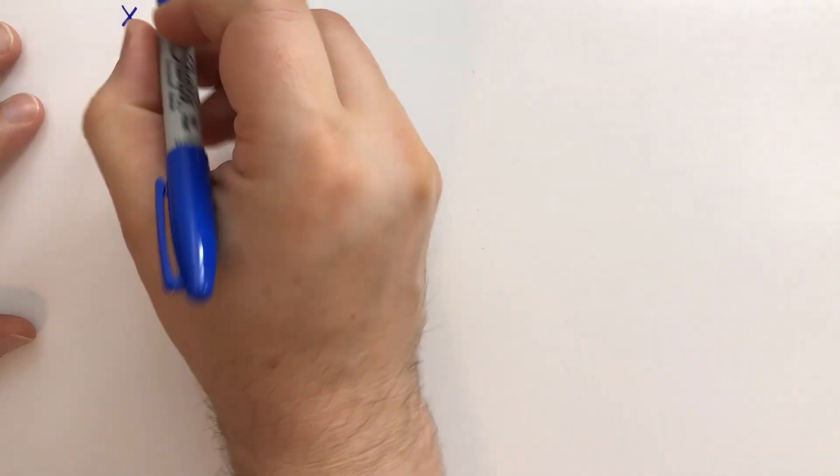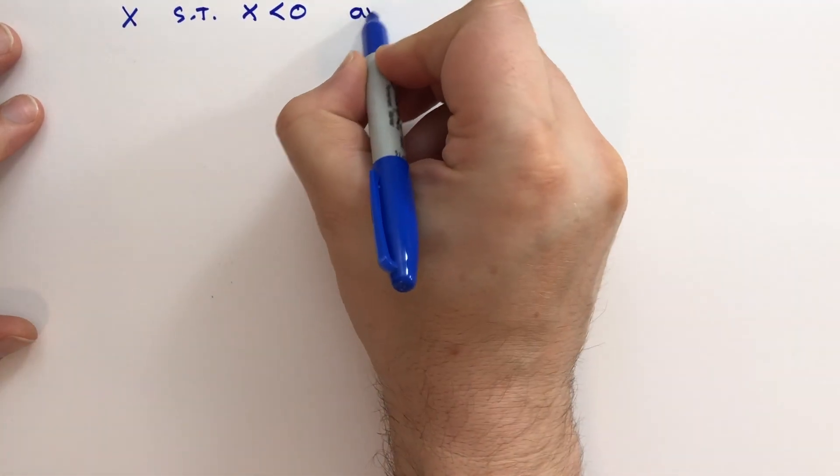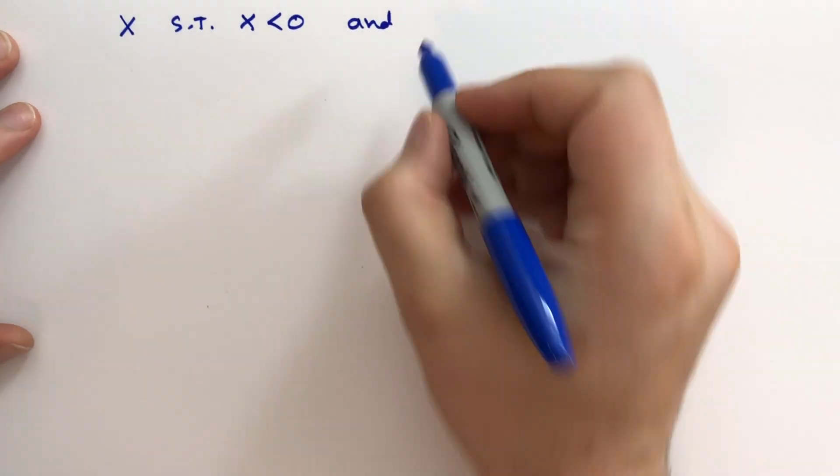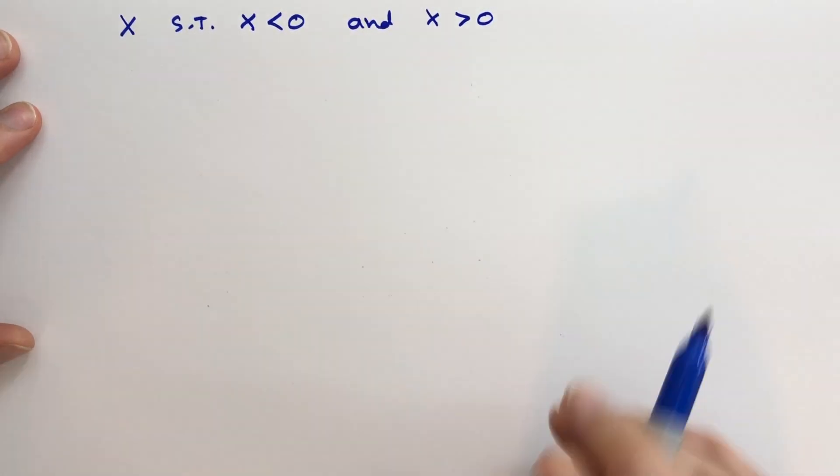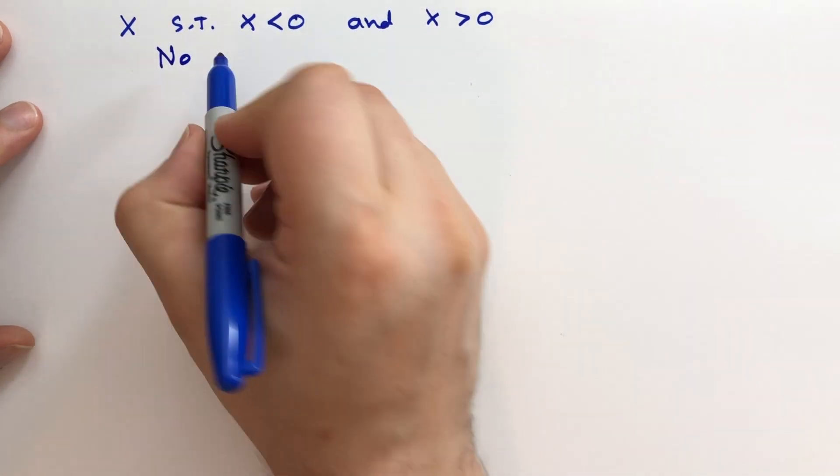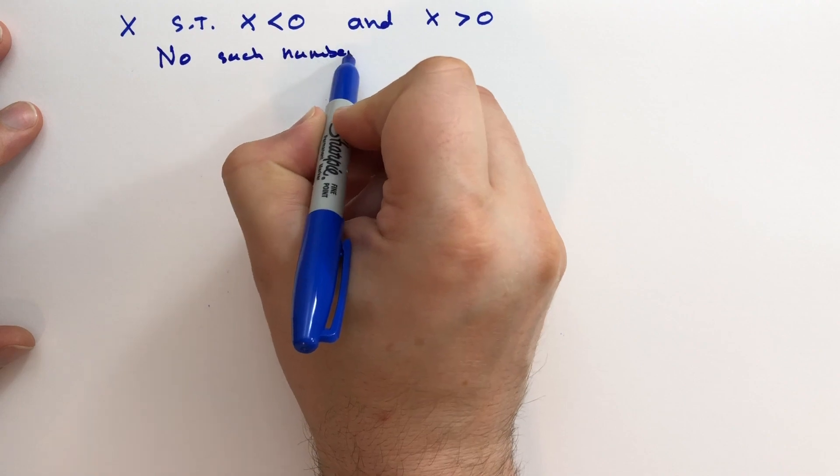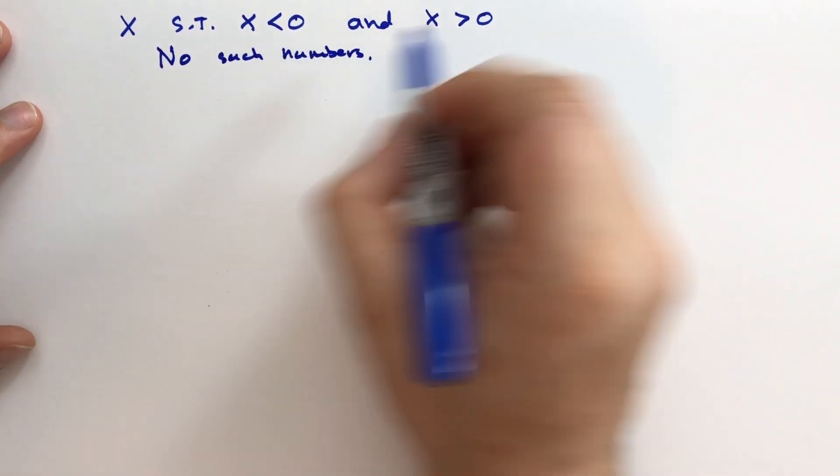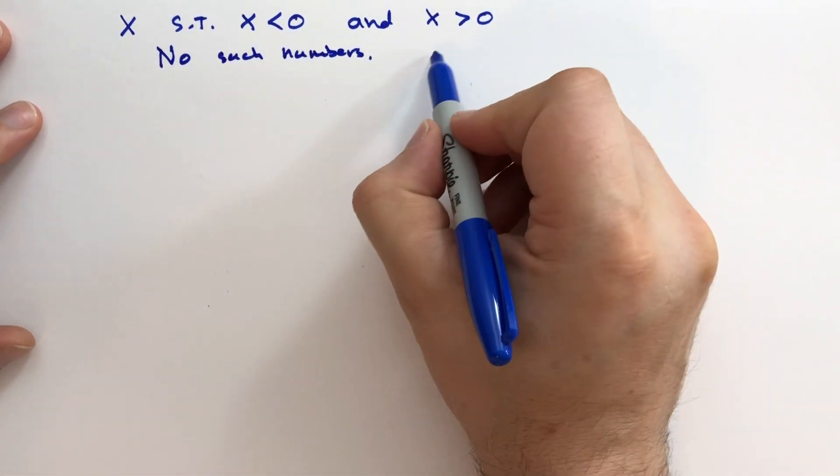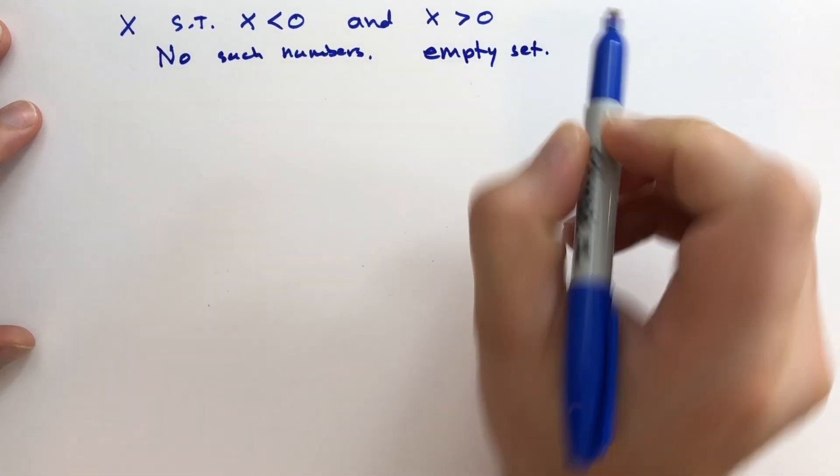So let's say we wanted all real numbers. We want all X such that X is less than 0, and simultaneously, X is greater than 0. Well, what real numbers would satisfy that? The answer is there are no such real numbers. So we say this set is empty.